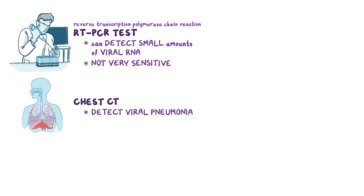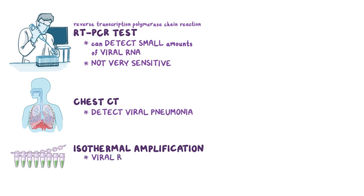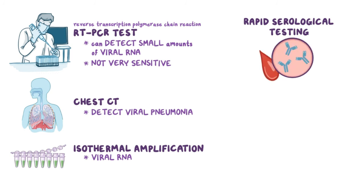Next, newer rapid testing methods for COVID-19 can get the results within minutes. One of these is isothermal amplification, which also checks for viral RNA. The other is rapid serological testing, which checks for the antibodies created by the immune system to fight the virus. Since it's checking for the antibodies made by the body, it can detect previous infections even after the virus is gone.